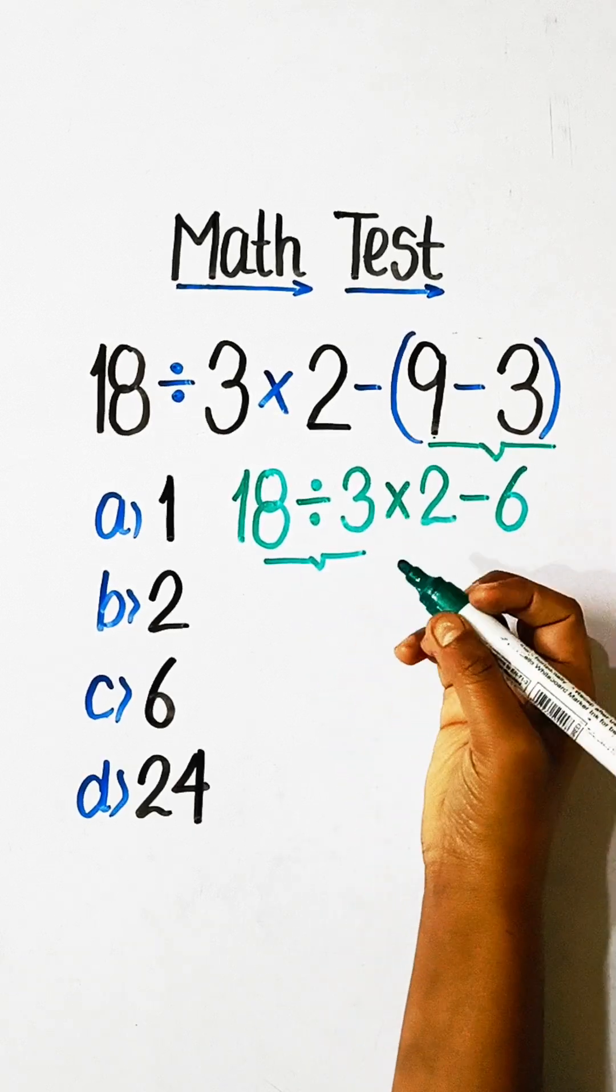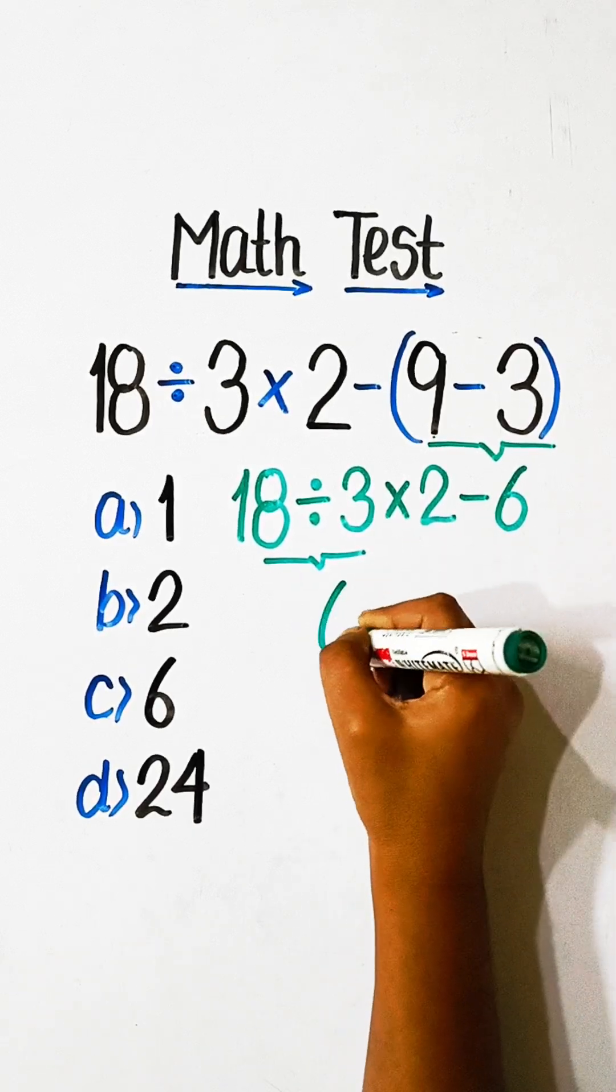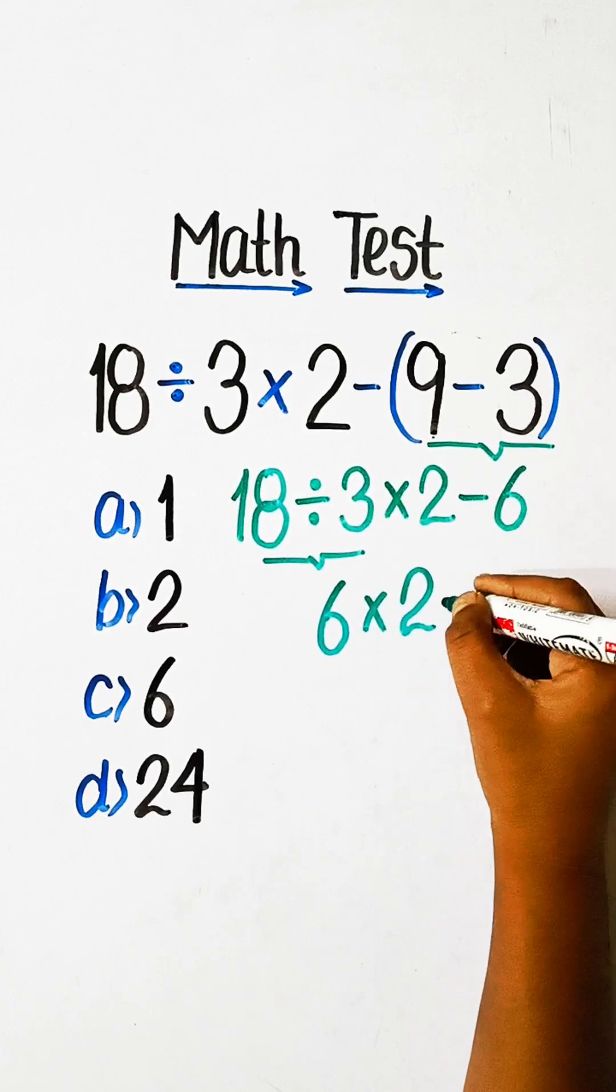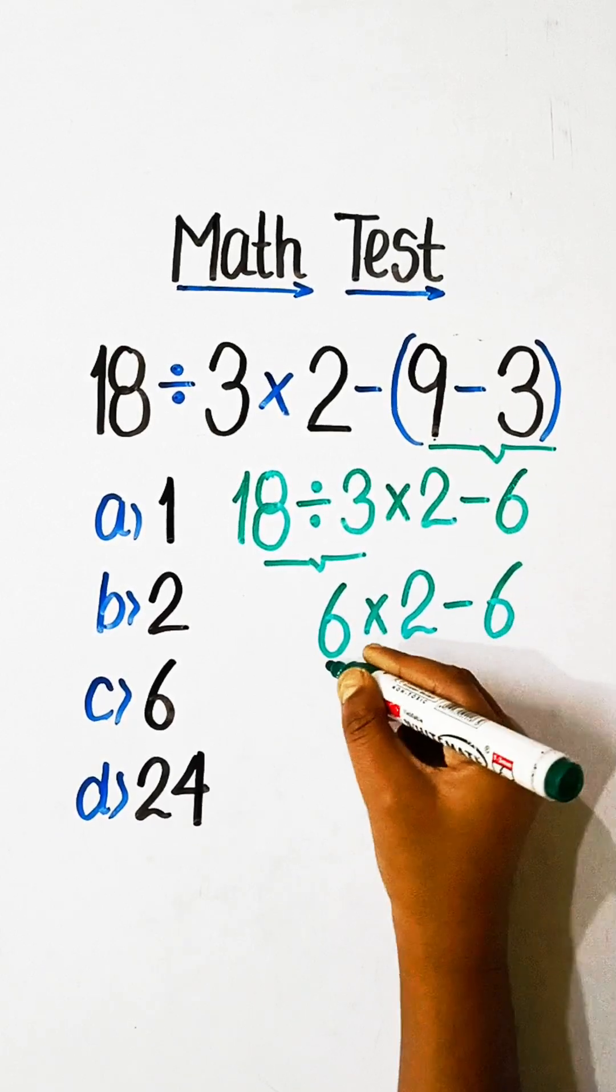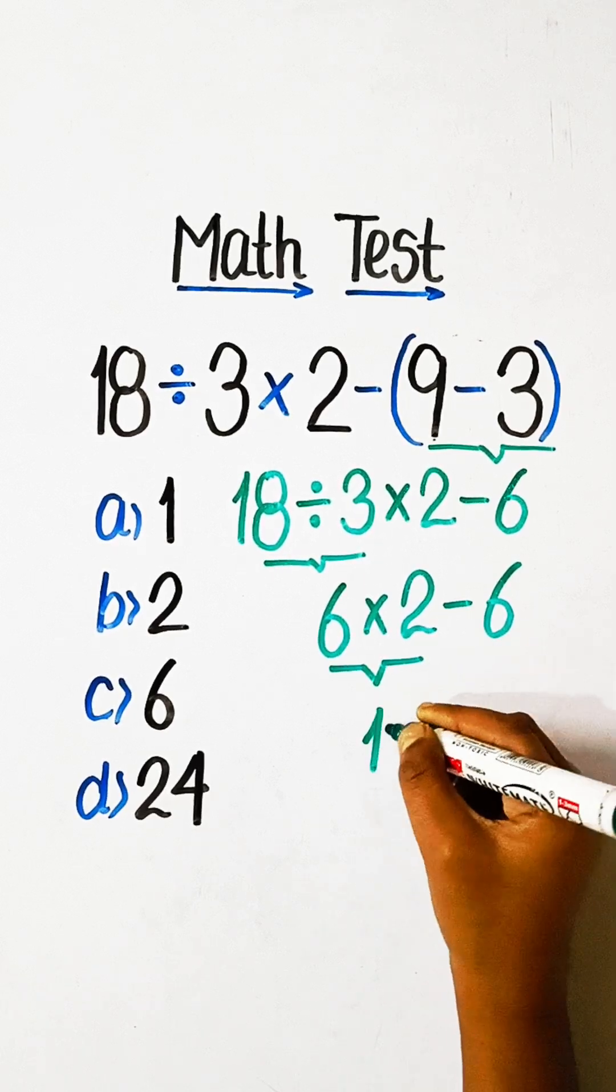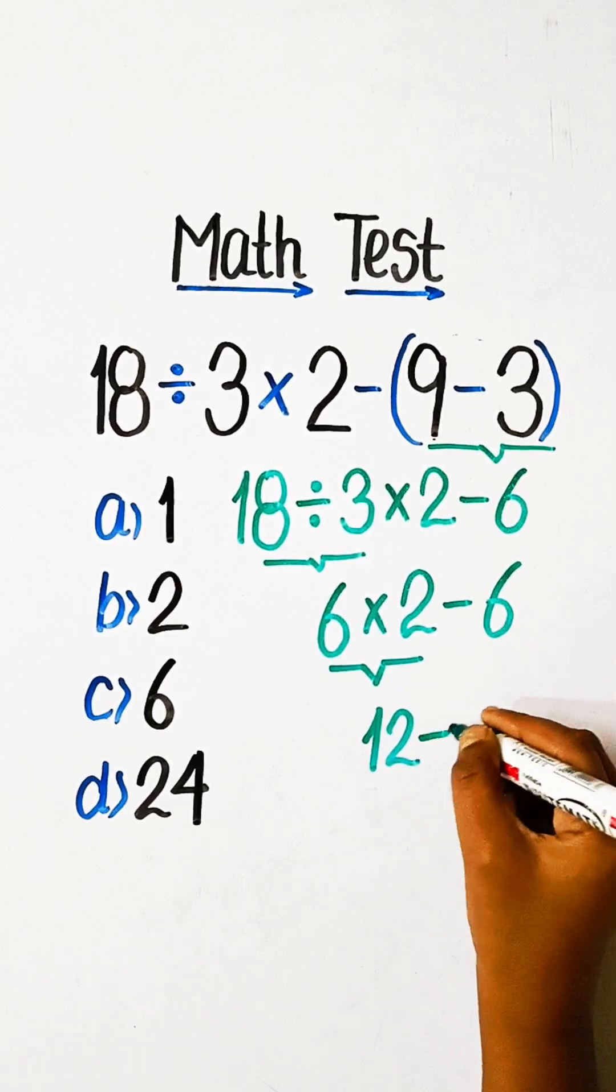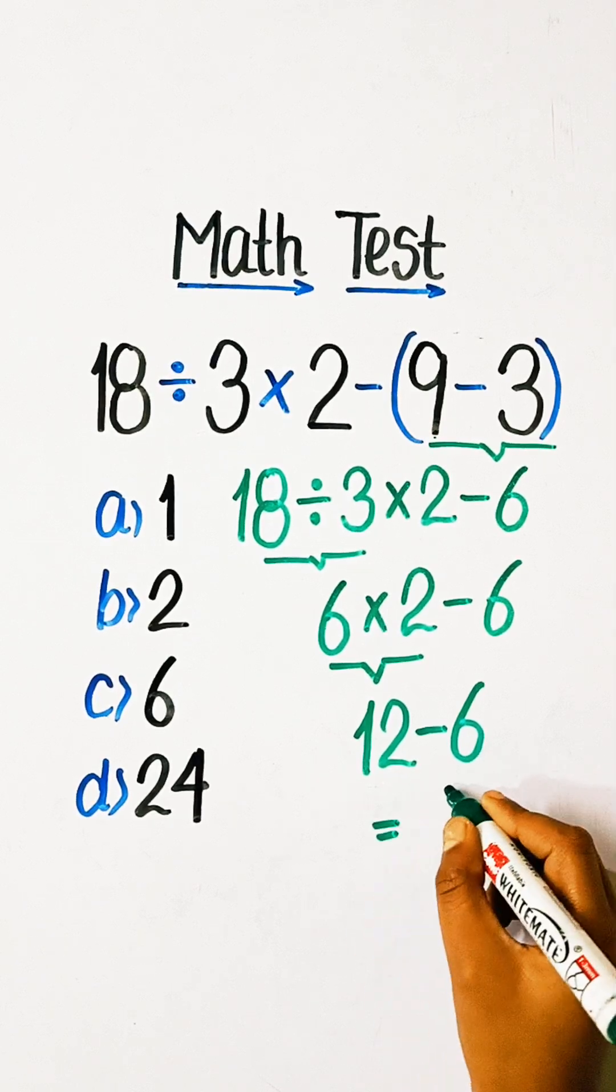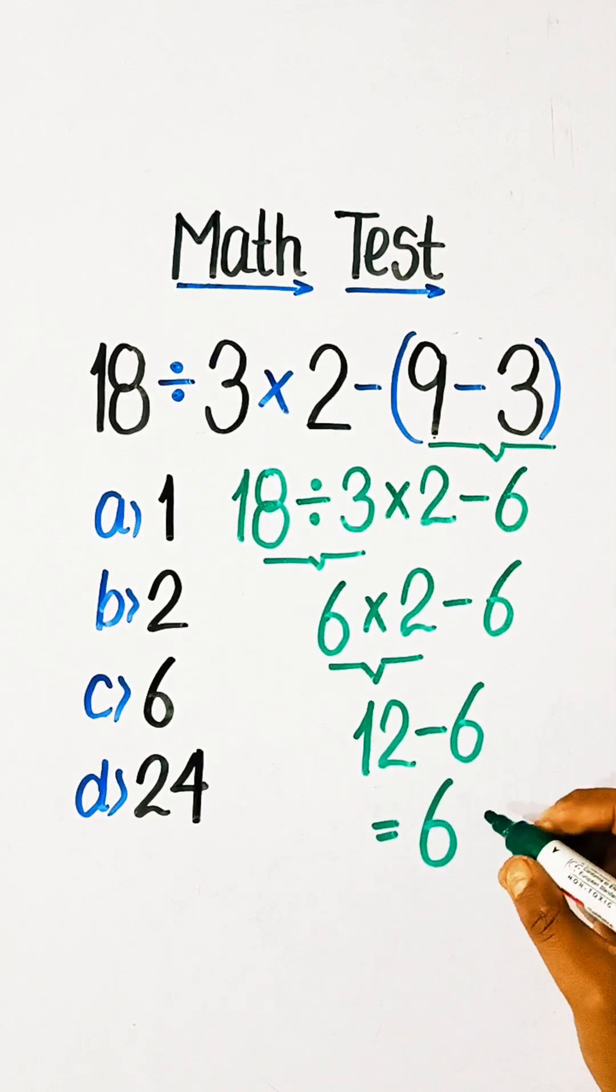18 divided by 3 is 6 multiplied by 2 minus 6. 6 multiplied by 2 is 12 minus 6. 12 minus 6 equals 6.